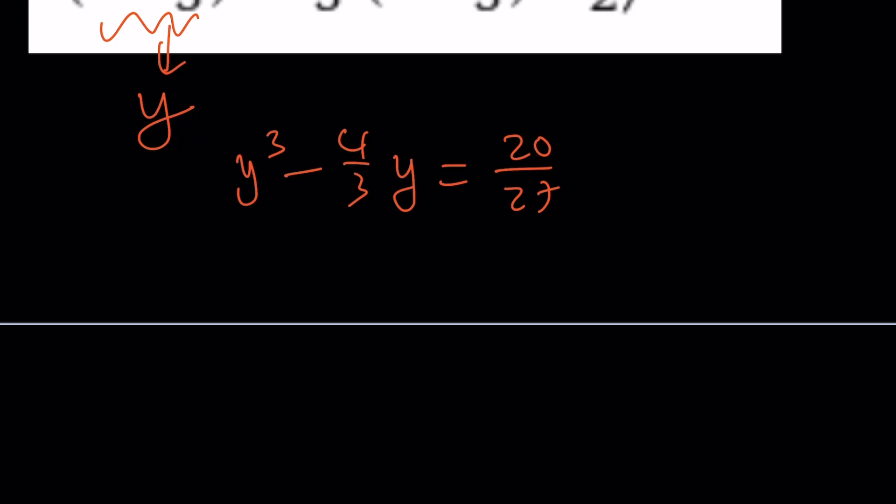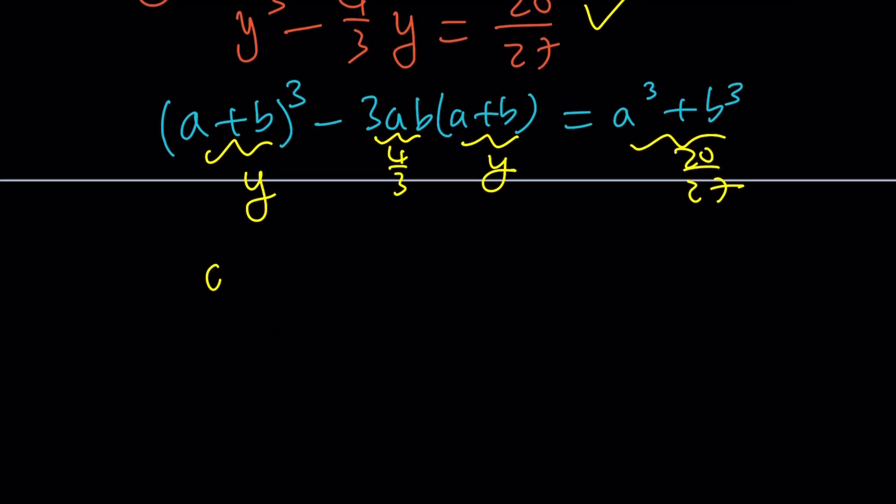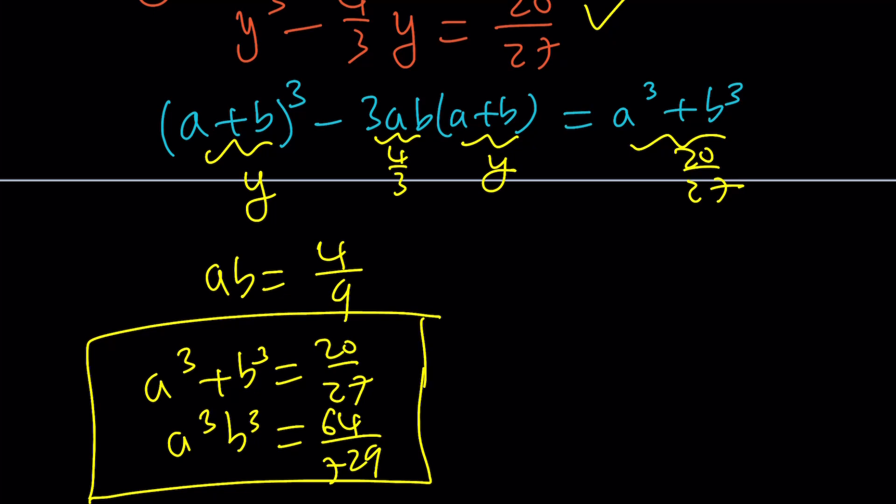And then I need to consider the infamous identity that I've been using all the time. If you subtract 3ab times a plus b from a plus b cubed, you get sum of 2 cubes, which gives us the cubic formula. Because if you replace a plus b with y and 3ab with 4 thirds and a cubed plus b cubed with 20 over 27, you get the same equation. You got yourself a system. So, the system is ab equals 4 ninths, a cubed plus b cubed equals 20 over 27. And if you cube both sides, you get a cubed b cubed equals 64 over 729. And then by substitution, you'll get a cubic equation in a cubed or b cubed.